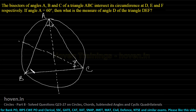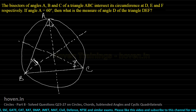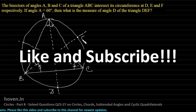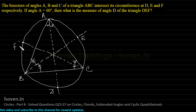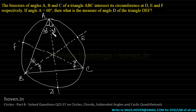These bisectors intersect the circumference at D, E and F. Angle A has been given as 60°. Since this is the bisector of angle A, each half is 30° and 30°.